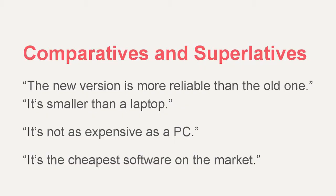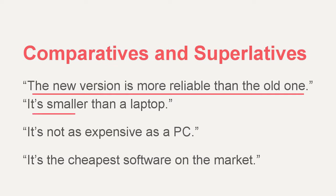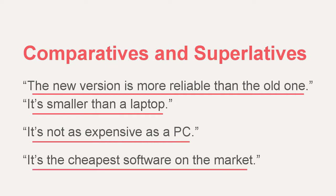Let's take a look at more examples where we're using comparative and superlative adjectives when talking about products. For example: the new version is more reliable than the old one. It's smaller than a laptop. It's not as expensive as a PC. It's the cheapest software on the internet.